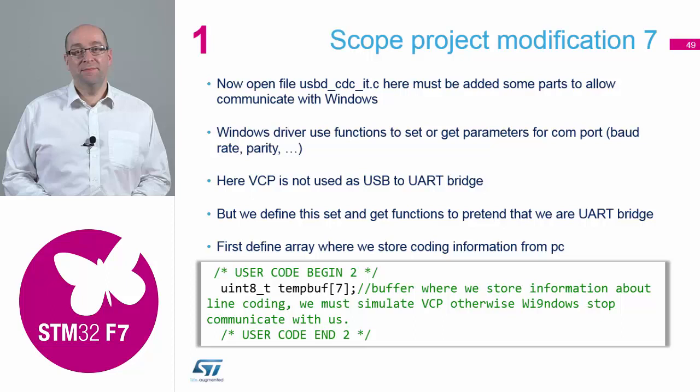The sections we need to add to this file are purely to manage the handshaking between the Microsoft operating system and the board. This is all there because Microsoft, when it connects a virtual COM port, sends some information out and expects to receive that information straight back. Otherwise it parks you as an unknown device. So we need to create a buffer in section two.